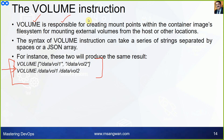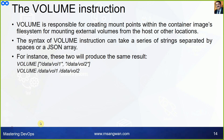The VOLUME instruction creates mount points within the container file system for mounting external volumes from the host or other locations. The syntax can take a series of strings separated by spaces, or a JSON array. For instance, VOLUME /data/volume1 /data/volume2 and the JSON array equivalent both produce the same result. Interestingly, most Dockerfile commands support two formats: JSON format (list or dictionary) and plain text format — both are acceptable.